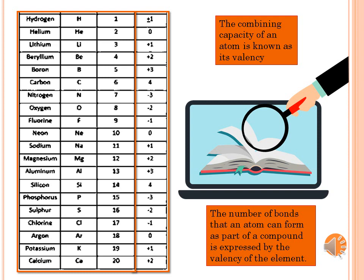Valences: Hydrogen equals -1, +1. Helium equals 0. Lithium equals +1. Beryllium equals +2. Boron equals +3. Carbon equals +4, -4. Nitrogen equals 3. Oxygen equals 2. Fluorine equals 1. Neon equals 0.